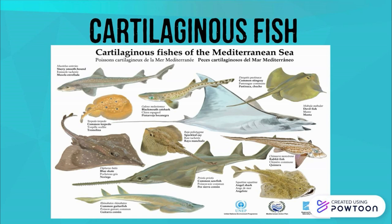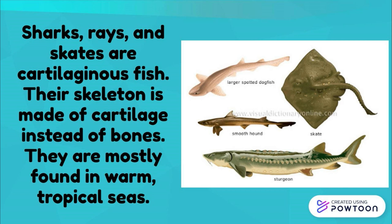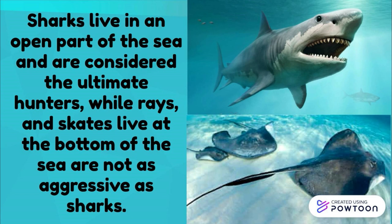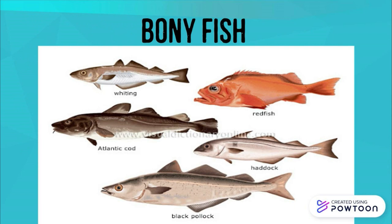Cartilaginous fish include sharks, rays, and skates. Their skeleton is made of cartilage instead of bones, and they are mostly found in warm, tropical seas. Sharks live in the open part of the sea and are considered the ultimate hunters, while rays and skates live at the bottom of the sea and are not as aggressive as sharks.